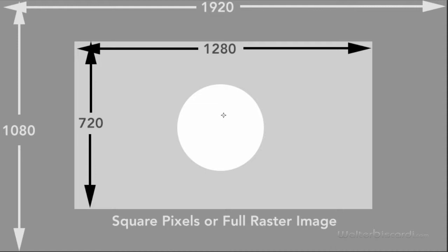Now, square pixel or full raster image means that the image is in its full width and its full height. For high definition, this generally means 1920 pixels wide by 1080 pixels high, or for 720p HD, 1280 pixels wide by 720 pixels high. This is full raster, full width, and full height of the image.